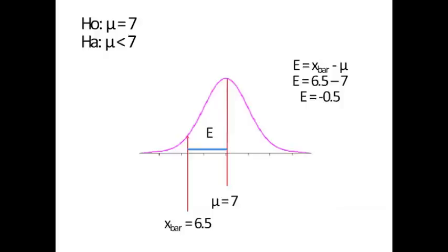X bar turns out to be 6.5, so E equals X bar minus mu. E equals 6.5 minus 7 and the effect size is negative 0.5. Our actual sample value was one half a unit below our anticipated mean. Now that effect size is still just a raw value. We have not converted it to a Z score yet.